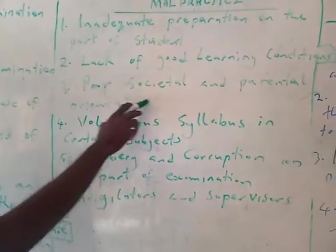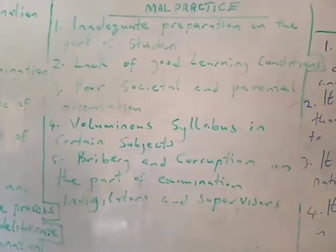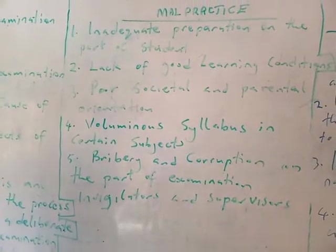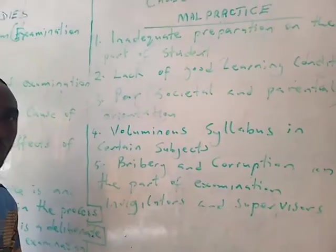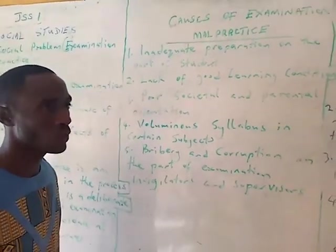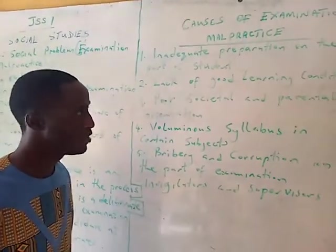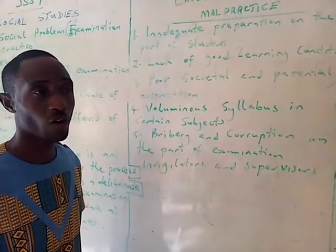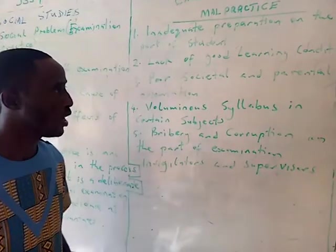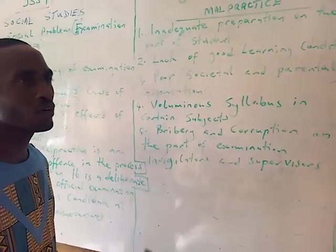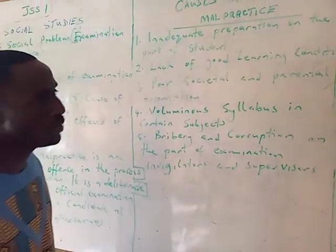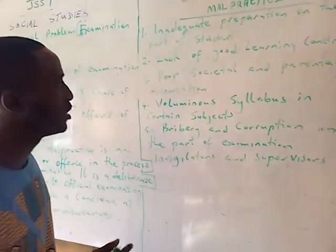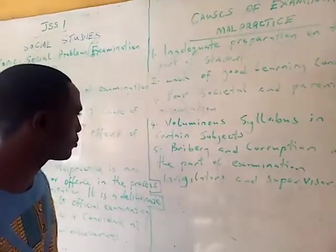The third cause is poor societal and parental orientation. Society today believes that students should just go and pass the examination — the process of how you pass does not matter. Even some parents will not find out if their children are involved in examination malpractice, and some parents have even paid bribes to ensure that teachers assist students in writing the examination.